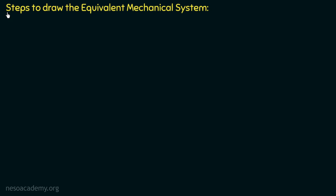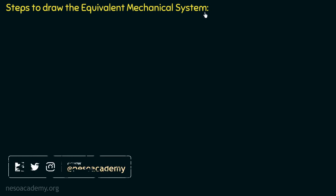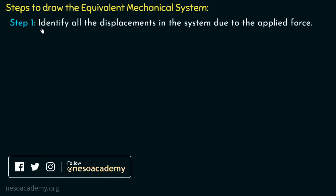Let us discuss the steps to draw the equivalent mechanical system. Step number one is to identify all the displacements in the system due to the applied force. In previous lectures, we have seen that whenever a force is applied on a mechanical system, there is a displacement. So in step number one, we have to identify all such displacements in the system.